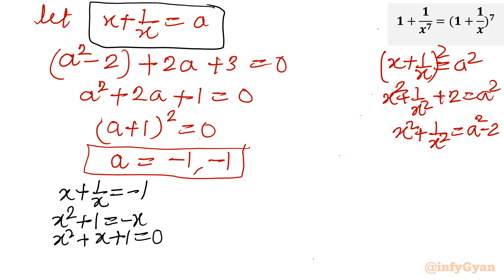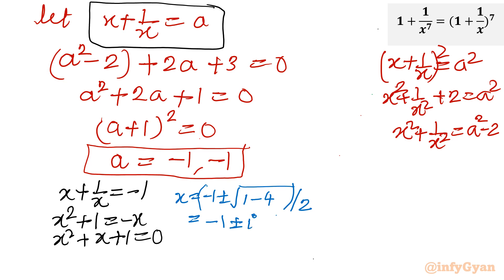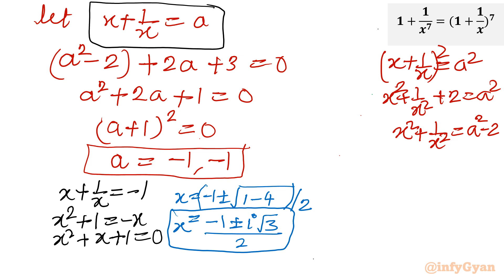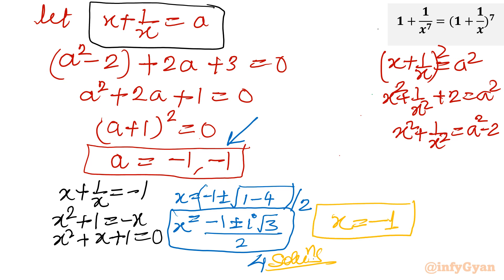Applying the quadratic formula: x = (-1 ± √(1 - 4)) / 2 = (-1 ± i√3) / 2. Both solutions are complex, reminiscent of the cube roots of unity — omega and omega squared. Because a = -1 has multiplicity 2, these complex solutions each have multiplicity 2, giving us 4 complex solutions total, plus x = -1 as one real solution.